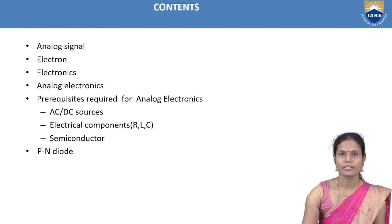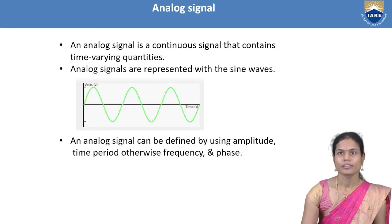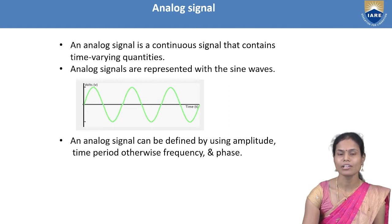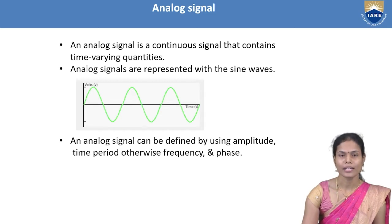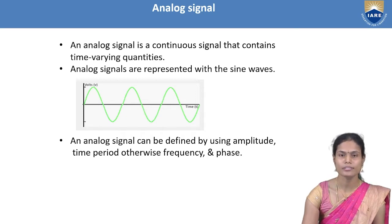We are discussing analog signal, electron, and electronics in order to understand what is meant by analog electronics. An analog signal is nothing but a continuously varying signal with respect to time. These analog signals are available in two forms: sinusoidal signals and non-sinusoidal signals.